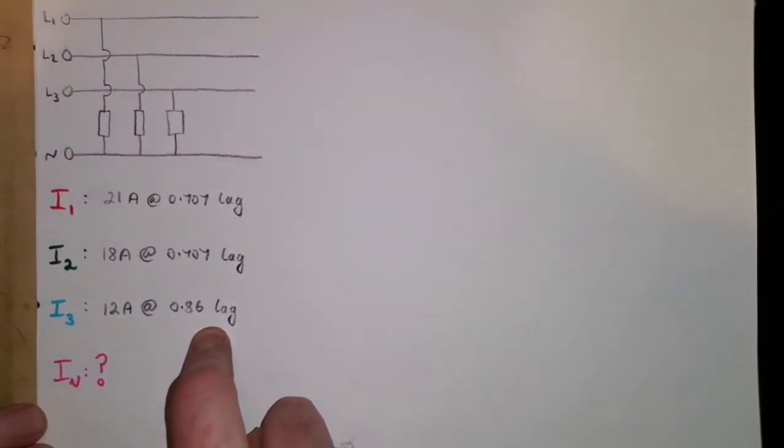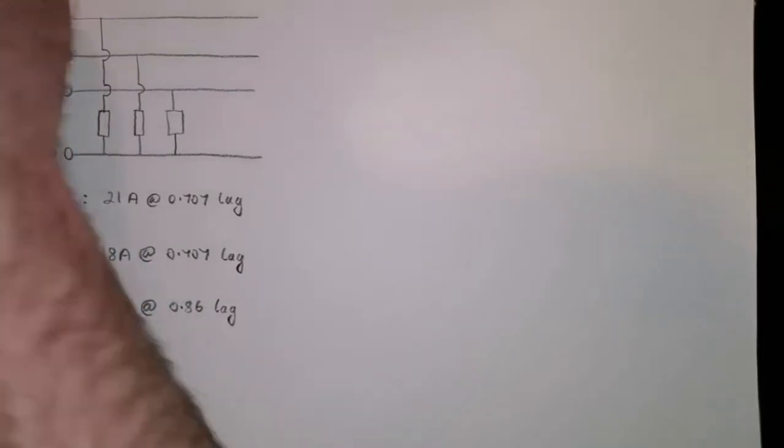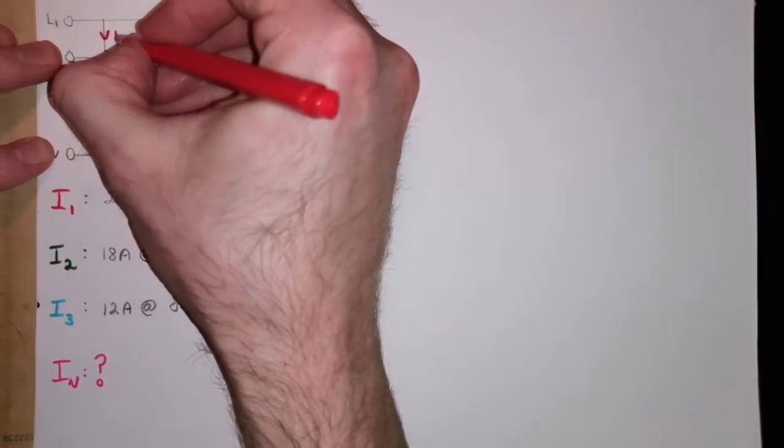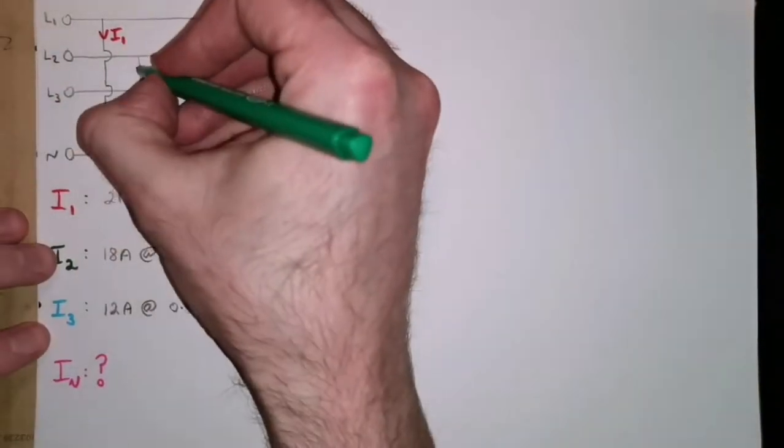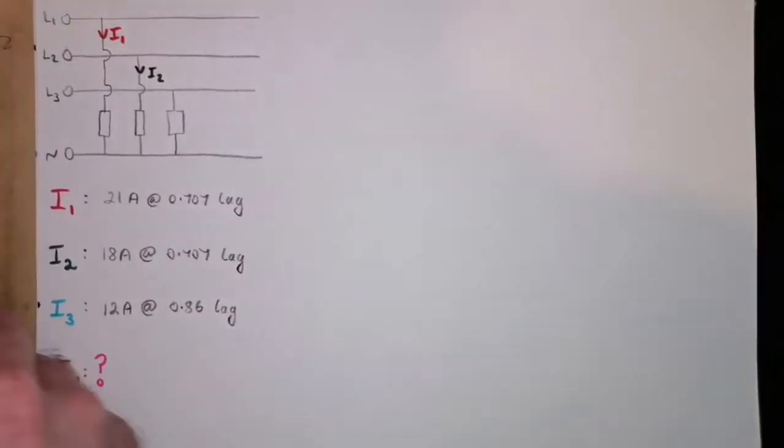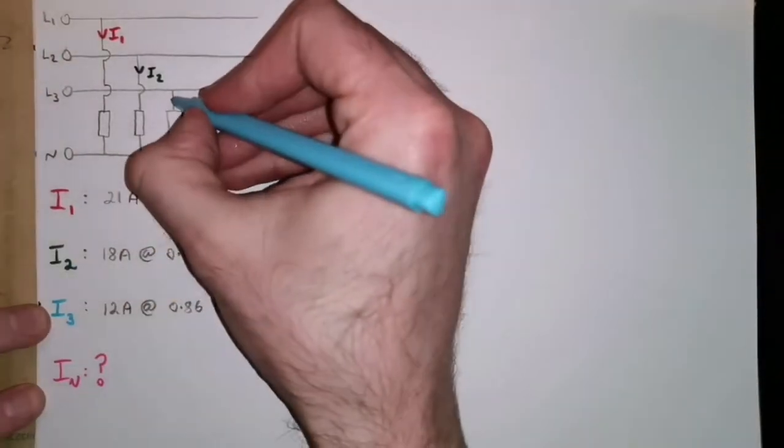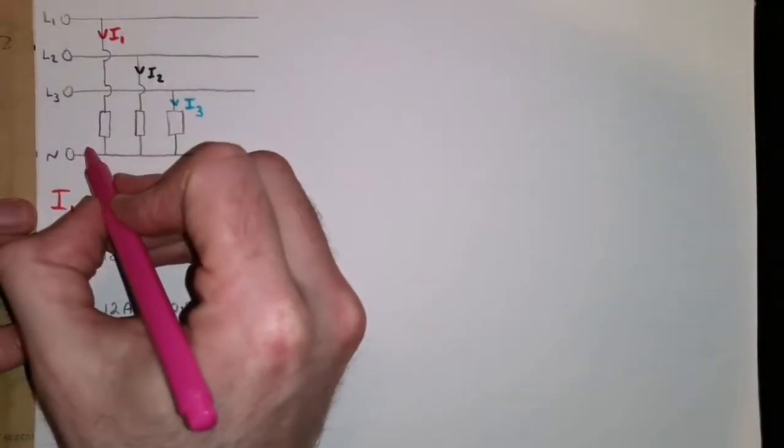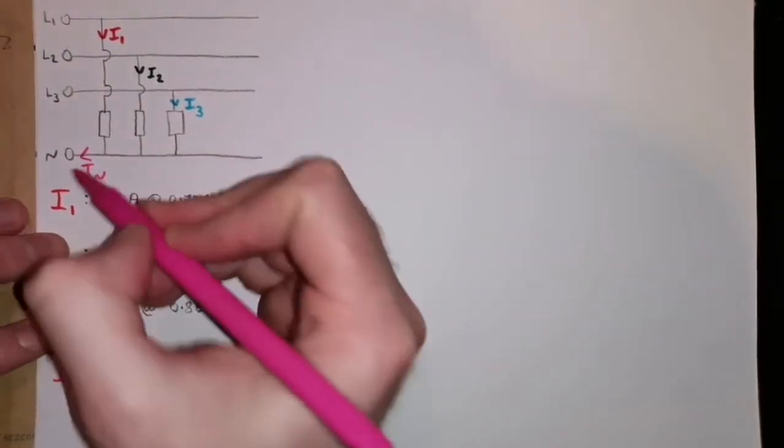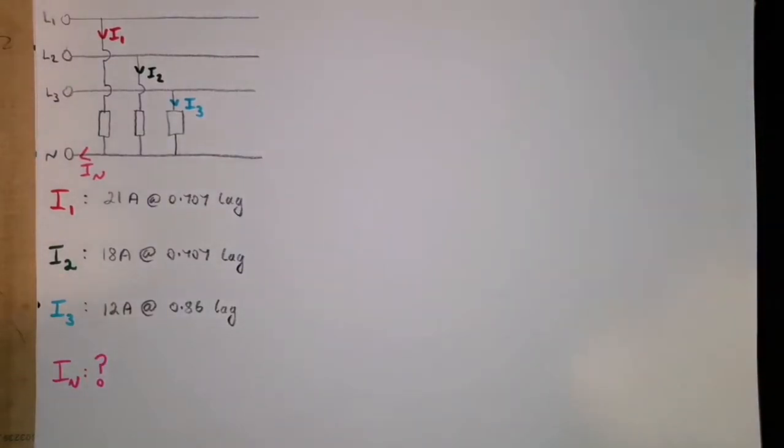In relation to what each of these are, I've used some colours as well, but we've essentially got I1 flowing in this load, I2 flowing into this load, and I3 flowing into this load. And then the question is asking us, what is the neutral current flowing back through the neutral part of the system.